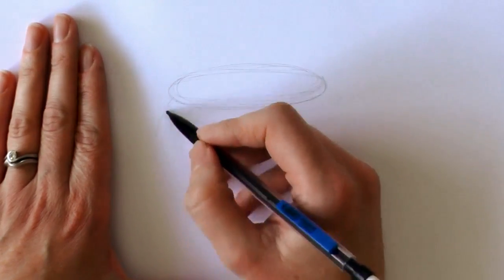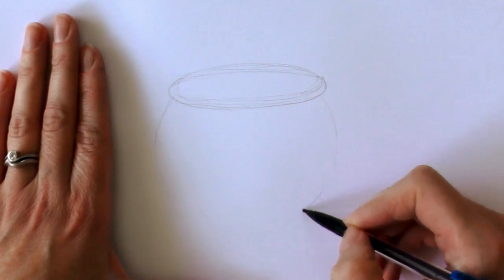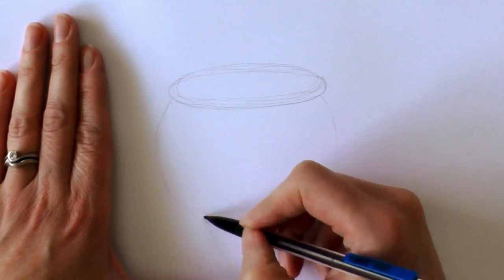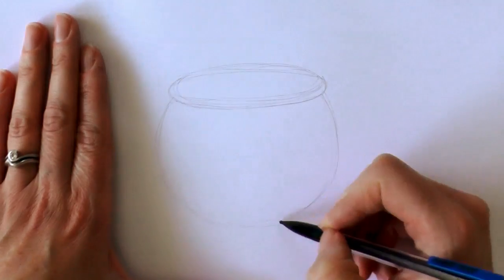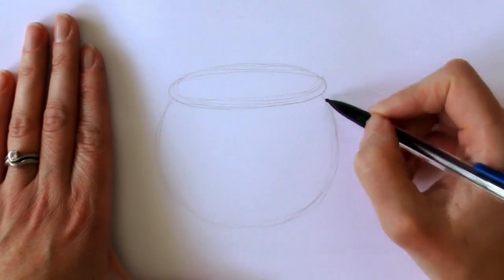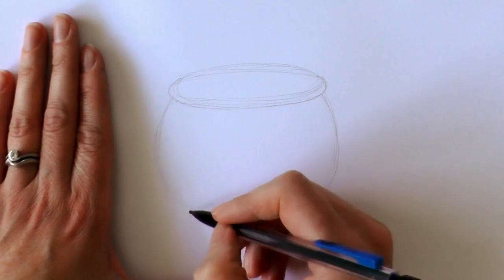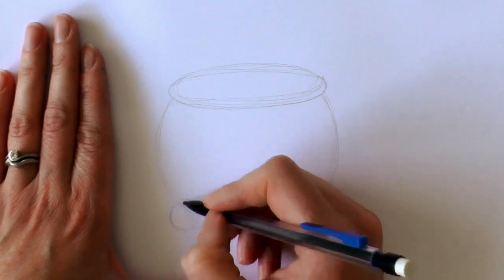Then a circle, circle to join onto the two ovals, then two little circles down the bottom as well.